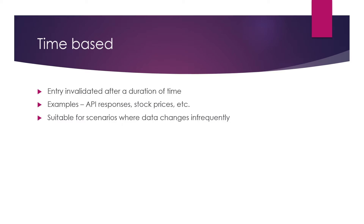Next we will talk about time-based invalidation. This is similar to time-based cache expiration in the sense that we also use a time-to-live property, TTL. For each entry we set a TTL, and whenever the TTL of that entry expires, we consider that entry as invalid. Because the entry has been invalidated, a fresh value will be fetched from the data source — whether it is the database or an external API.